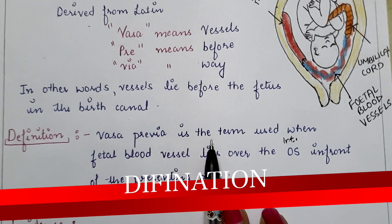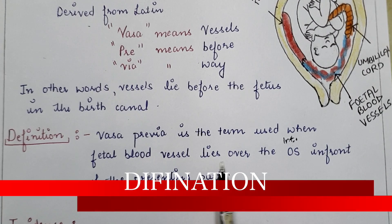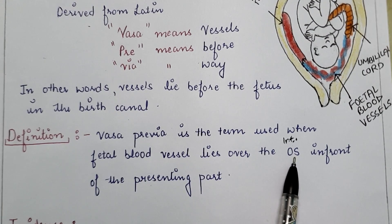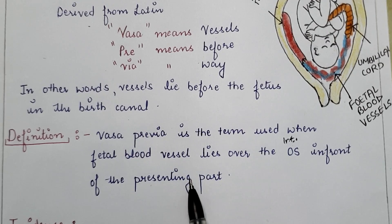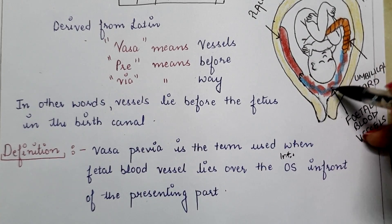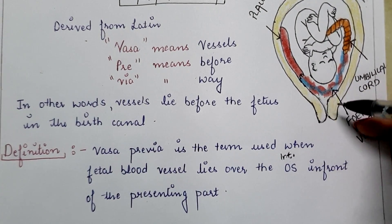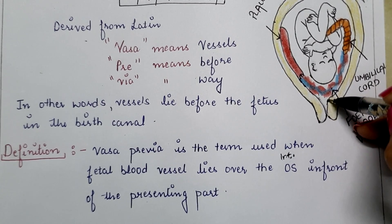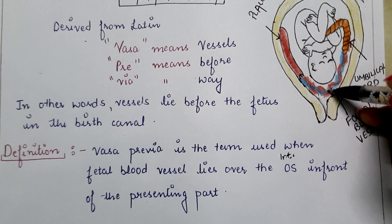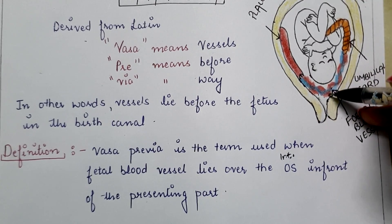Definition: Vasa previa is a term used when fetal blood vessels lie over the internal os of the cervix, in front of the presenting part. These fetal blood vessels lie over the internal os of the cervix, before the presenting part.